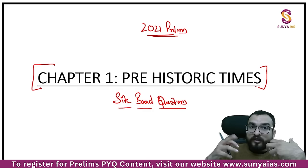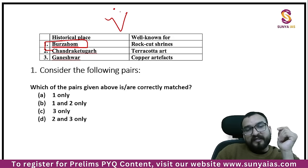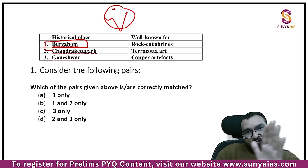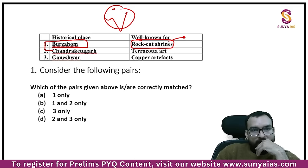For those who are new and wondering how to approach prehistoric times: don't give too much focus and don't learn by heart how humans were developing — nobody will ask you that. But sites you have to learn by heart. Those who are my students must have correctly understood that Burzahom is a Neolithic site, and they know not only Burzahom but all sites — Daojali Hading, Chirand, Paiyampalli — all these sites are Neolithic.